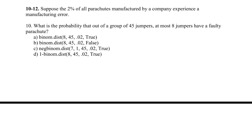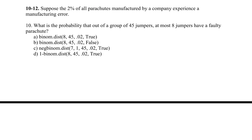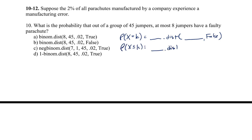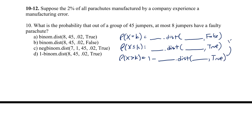Now we'll look at random variables and how to calculate probabilities in Excel. For P(X = K) you use the distribution name dot dist with parameters and 'false.' For P(X ≤ K) you use 'true.' For P(X > K), since Excel doesn't do greater than directly, you use 1 minus the distribution dot dist with 'true,' because that's 1 minus P(X ≤ K).